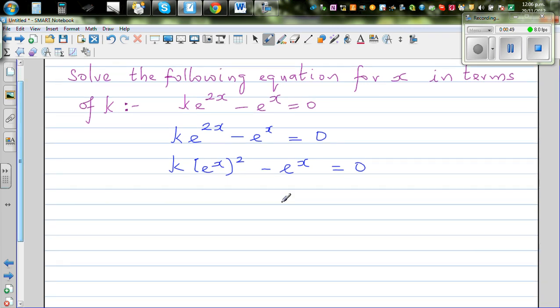So what can we do? Can we factor out e to the power x? If you factor out e to the power x, you have e to the power x times k times e to the power x minus 1 equals 0.